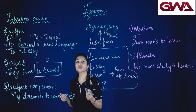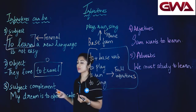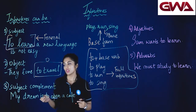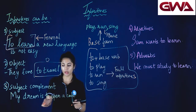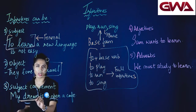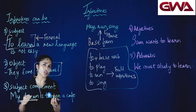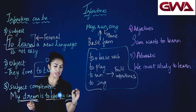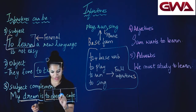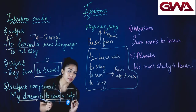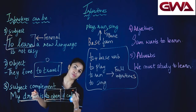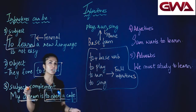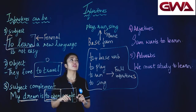Third way में infinitives use किये जा सकते हैं — वो है subject complement। Complement वो चीज होती है जो हमें subject के बारे में ज़्यादा information दे। My dream is to open a cafe। यहाँ subject है my dream, और subject के बारे में ज़्यादा information दे रहा है to open a cafe — यह पूरा part infinitive है। इसलिए वो बन जाता है हमारा subject complement।